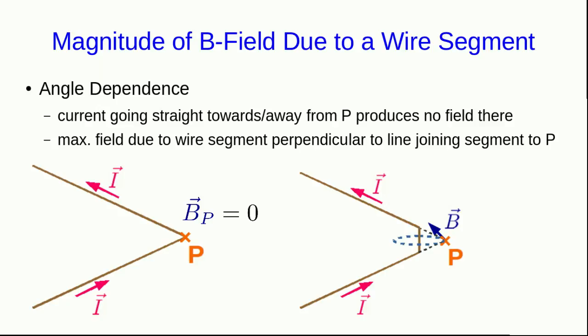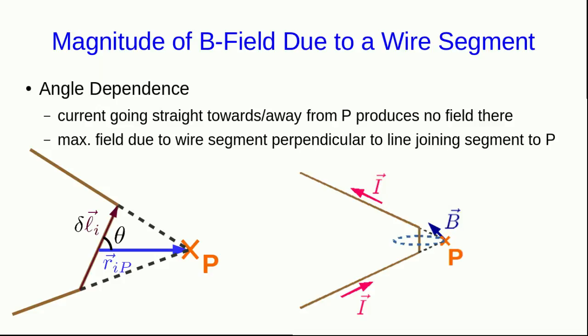The next thing to notice is that the maximum field strength occurs when the wire is going perpendicular to a line joining that piece of wire to the point P where we want to know the B field. And more generally, if there is some angle theta between the wire and the vector pointing at the point P, then we find that the magnitude of the field at P goes as sine theta.